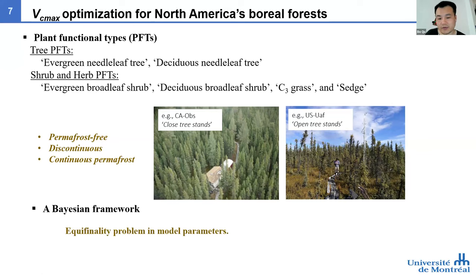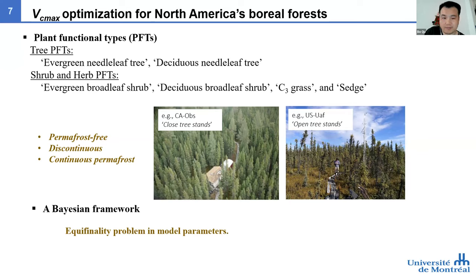For the VCMAX, we tried to look at observations from leaf-level gas exchange measurements, but so far measurements are very limited for the boreal biome. Also, different sites have different plant species with different abundances. Trees are mostly dominated by black spruce and a few species, but for shrubs and herbs there are all different kinds of species with different abundances.